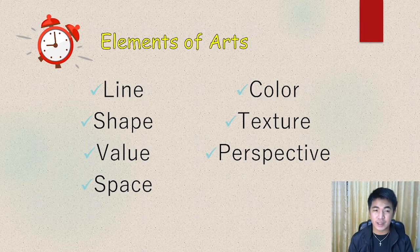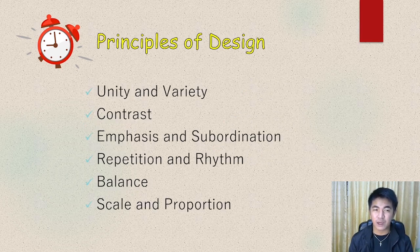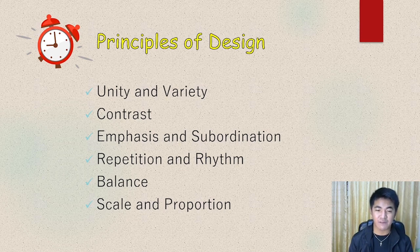So as you can see, we have here the elements of arts. We have line, shape, value, space, color, texture, and perspective. On the other hand, we also discussed about the principles of design. We have the following: unity and variety, contrast, emphasis and subordination, repetition and rhythm, balance, scale, and proportion.